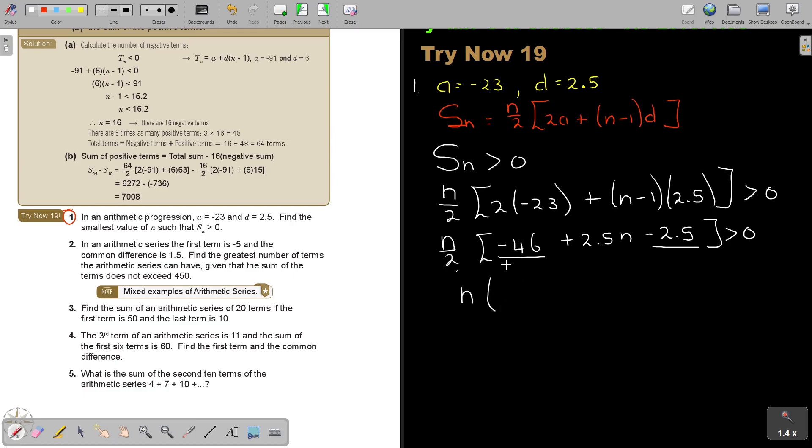I sit with N. If I simplify this, I get negative 48.5 plus 2.5N is bigger than 0. Don't multiply it out because it's already factorized.